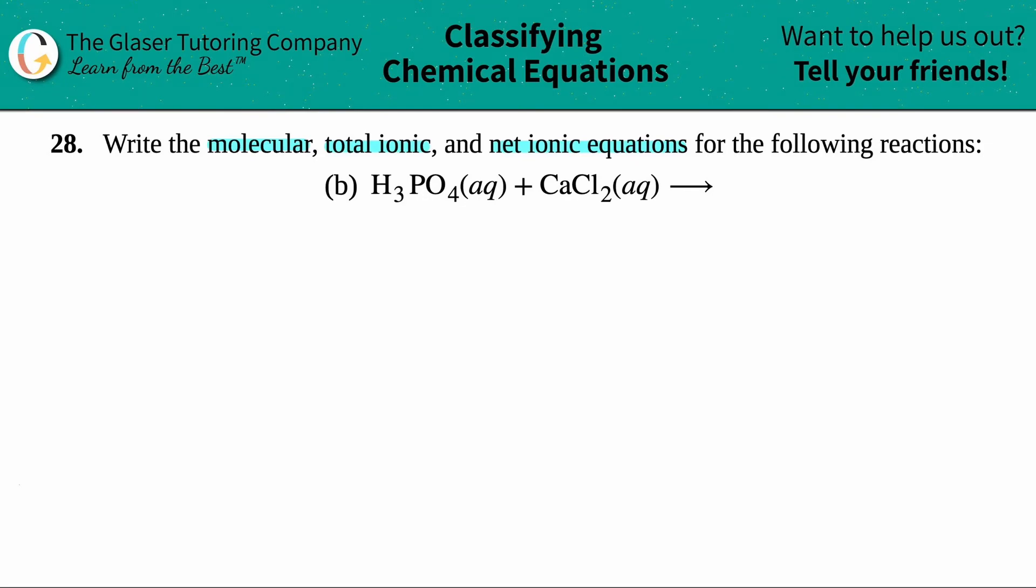The first thing that we're always going to do is find the molecular equation, and then from the molecular you can get the total ionic, and then from the total ionic you can get the net ionic. So it always flows like that. The first thing is we're going to try to find the molecular equation.